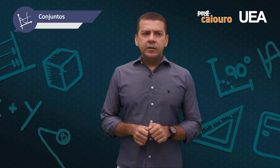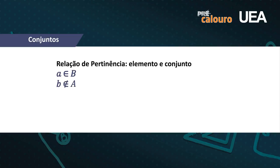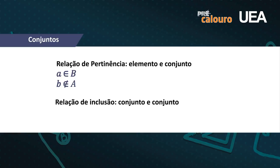Quando falamos de relação de pertinência, referimo-nos sempre a elemento e conjunto. Por exemplo: 'a pertence a B', ou seja, o elemento a pertence ao conjunto B. Ou podemos ter o elemento b que não pertence ao conjunto A. Quando falamos de inclusão, falamos apenas de conjuntos: 'B está contido em B' — isso é uma propriedade, todo conjunto está contido nele mesmo. Outro exemplo: 'A está contido em B', diz-se A é subconjunto de B.